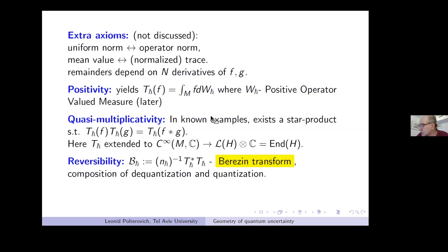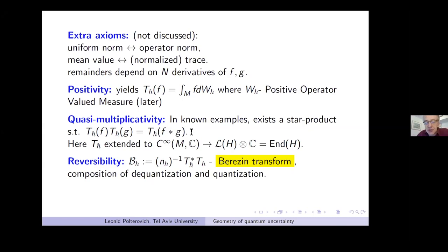Question: Are there topological criteria to ensure that the star product and T_{h-bar} being multiplicative exists? I will give some examples and a very toy case of classification. Existence of such a structure seems to be a complicated thing in the context described.